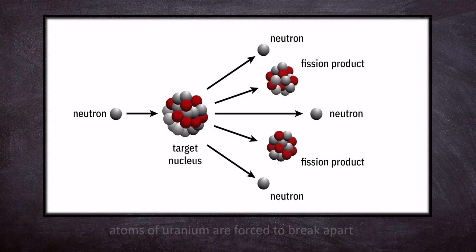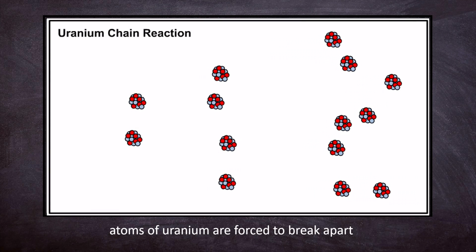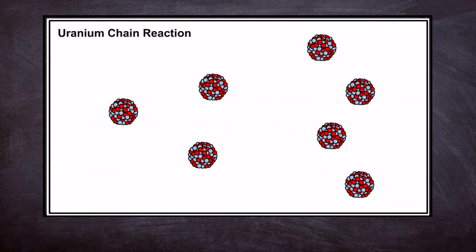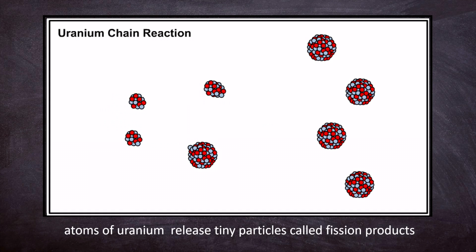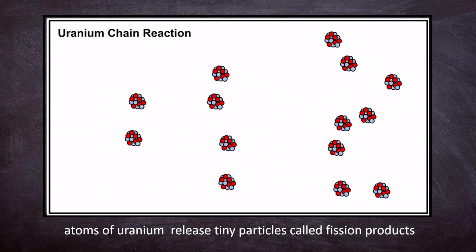In a nuclear reactor, atoms of uranium are forced to break apart. As they split, the atoms release tiny particles called fission products.